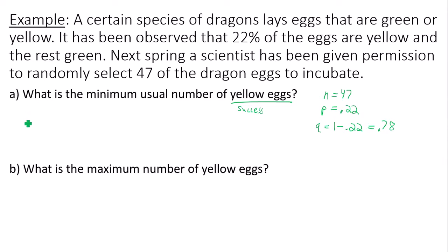So the general range rule of thumb says that minimum usual value would be your mean minus two standard deviations. So first we need to find the mean of this binomial distribution, mu. It's n times P. It's 47 times 0.22. That is going to give you 10.34.